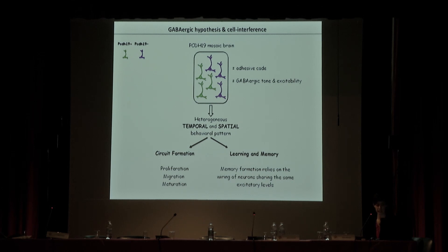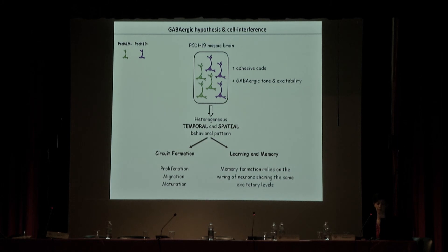This bias may also apply later during learning and memory. It is important to keep in mind that the excitability level of a cell determines whether it will be recruited into a memory trace. In other words, memory formation relies on the wiring of neurons that share a similar excitatory level.